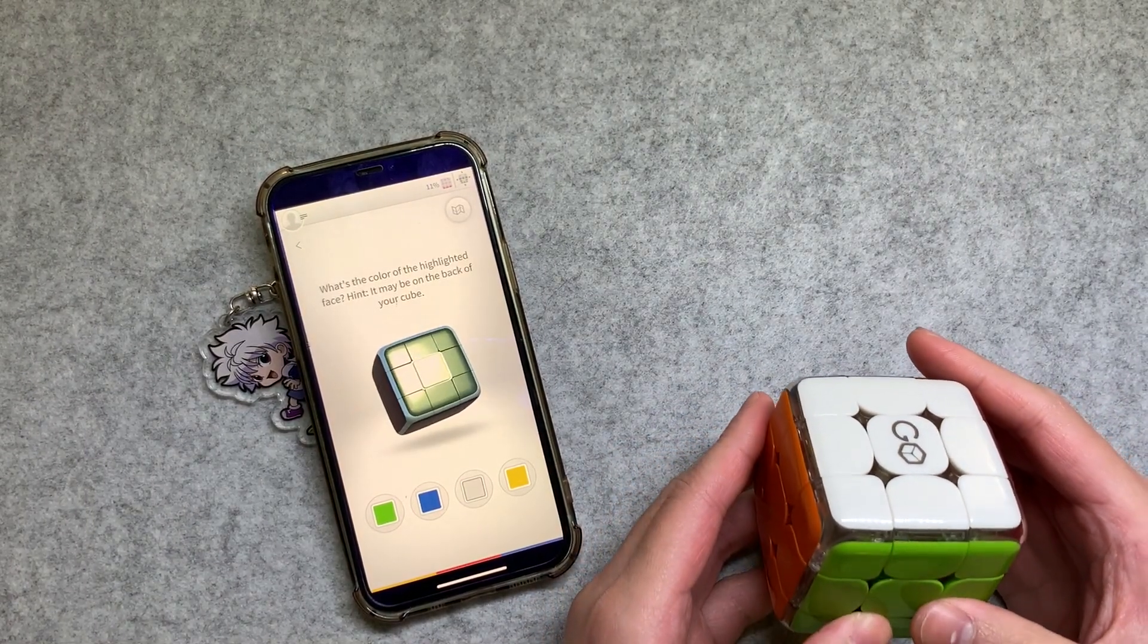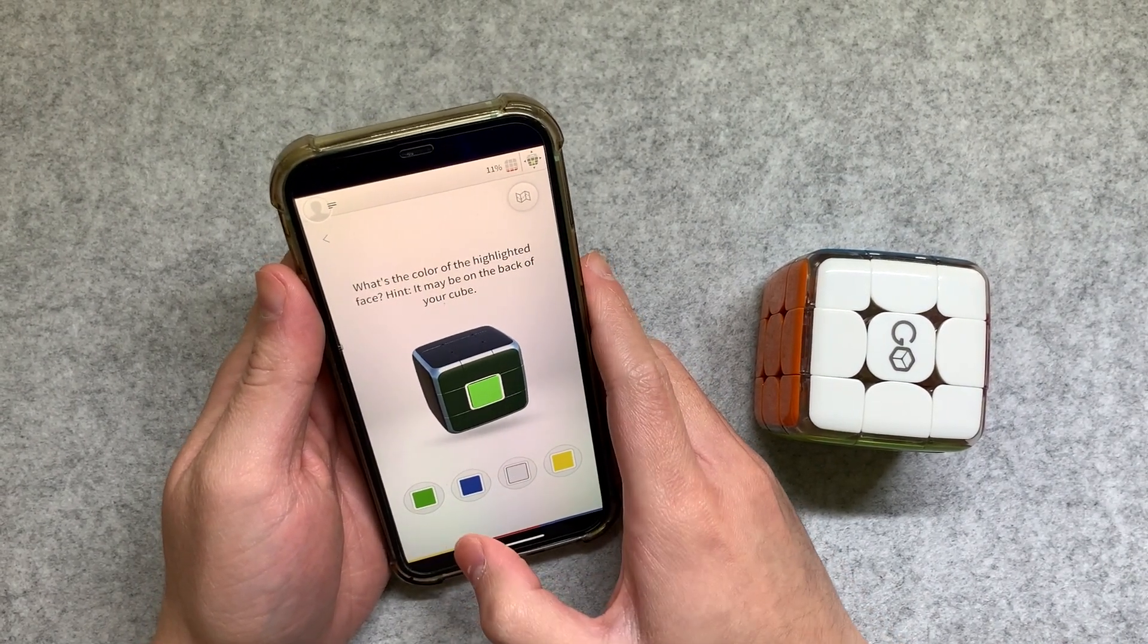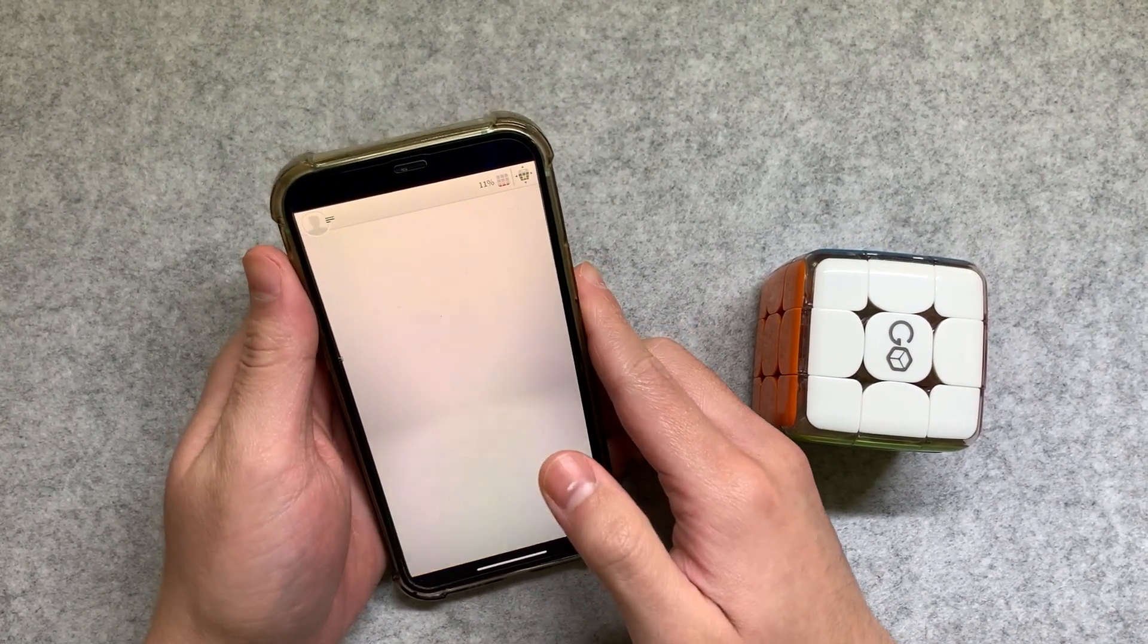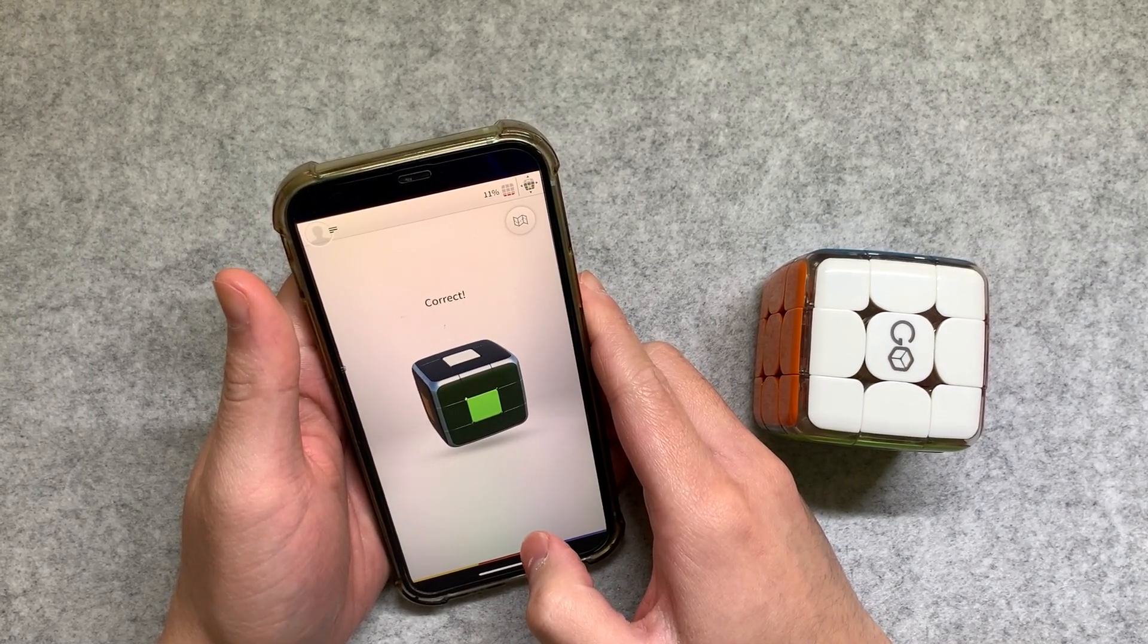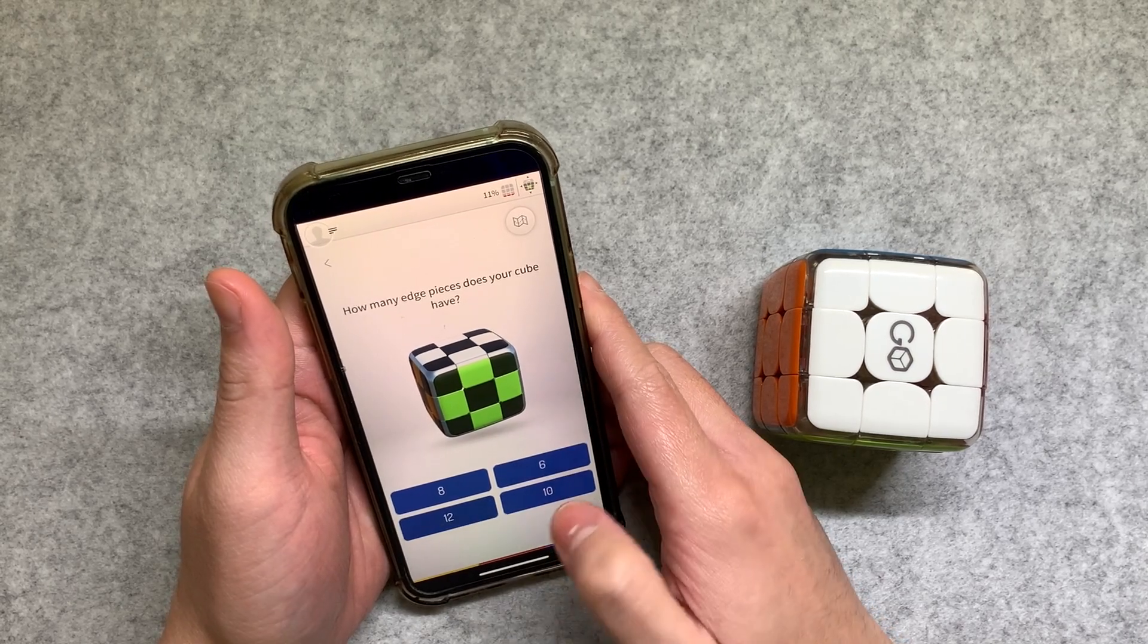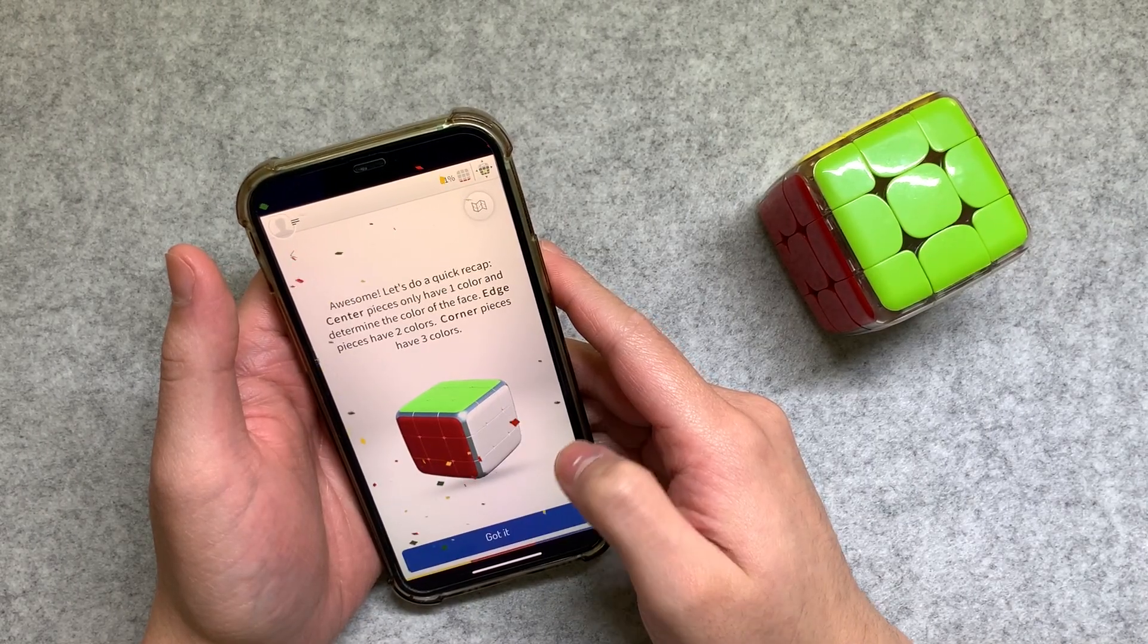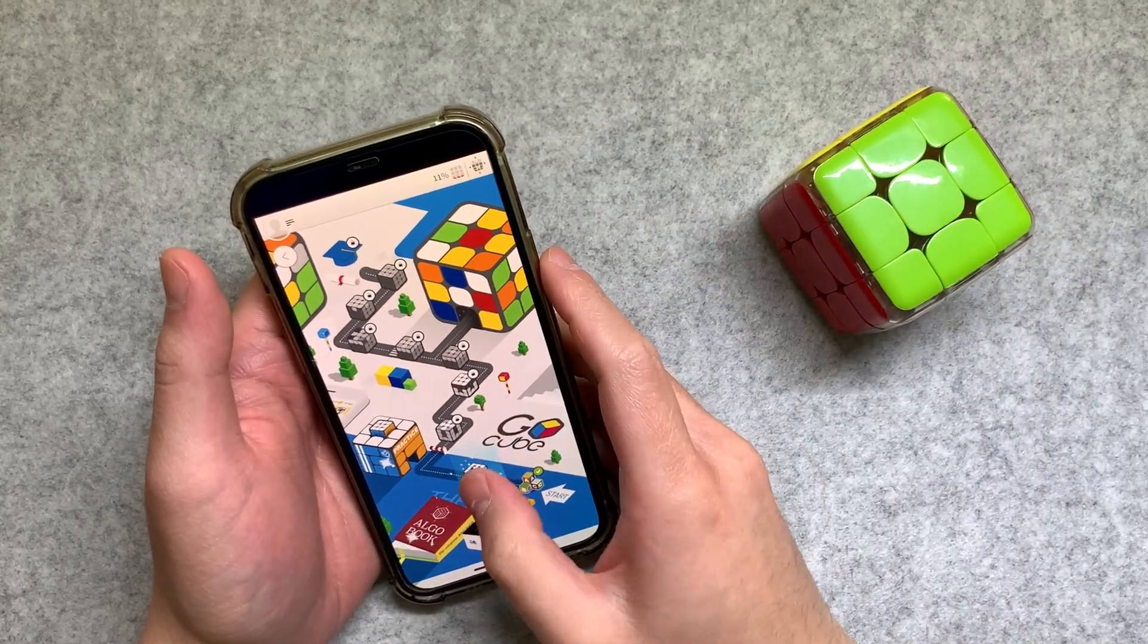What is the color of the highlighted face? Green. So it looks like this is a very basic tutorial. Opposite yellow, white. Two edge pieces. Was it 12? Yeah. So yeah, this looks like it teaches you how to do the basics.